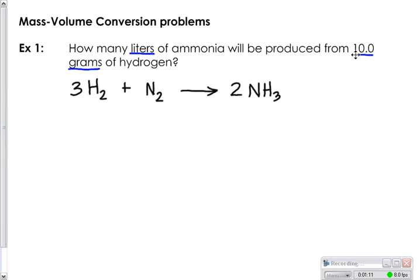As in the other stoichiometry problems we've done, we always want to identify what we know and what we're trying to find. We know we have 10 grams of hydrogen, so under the hydrogen in the problem I'm going to write my 10 grams because that's what we know. And I want to know how many liters of ammonia will be produced, so I'm going to put my question mark with my liters.